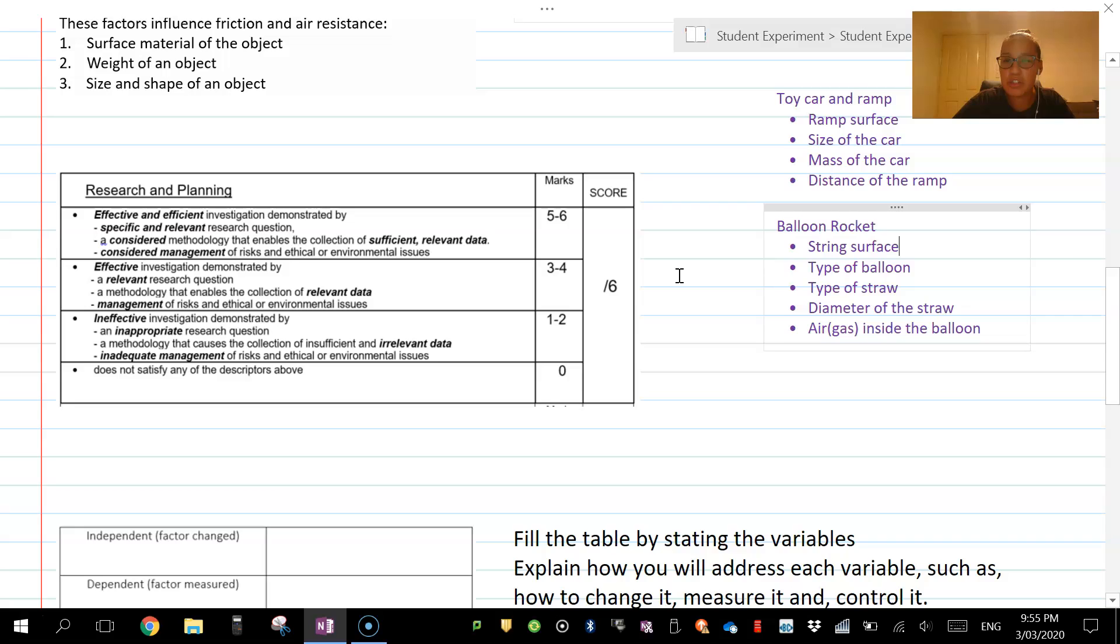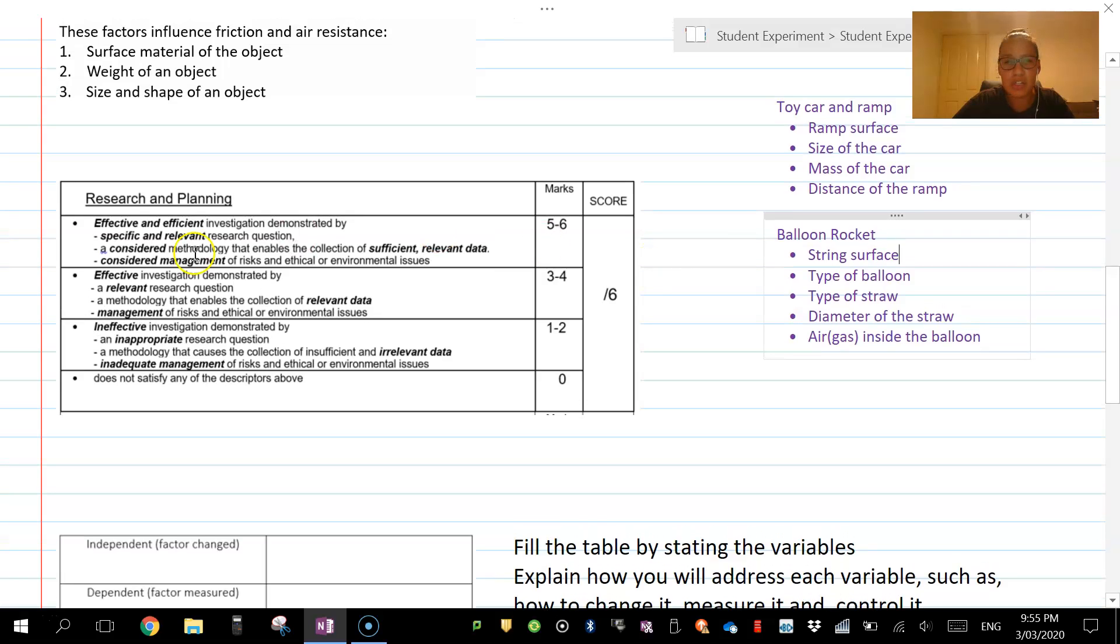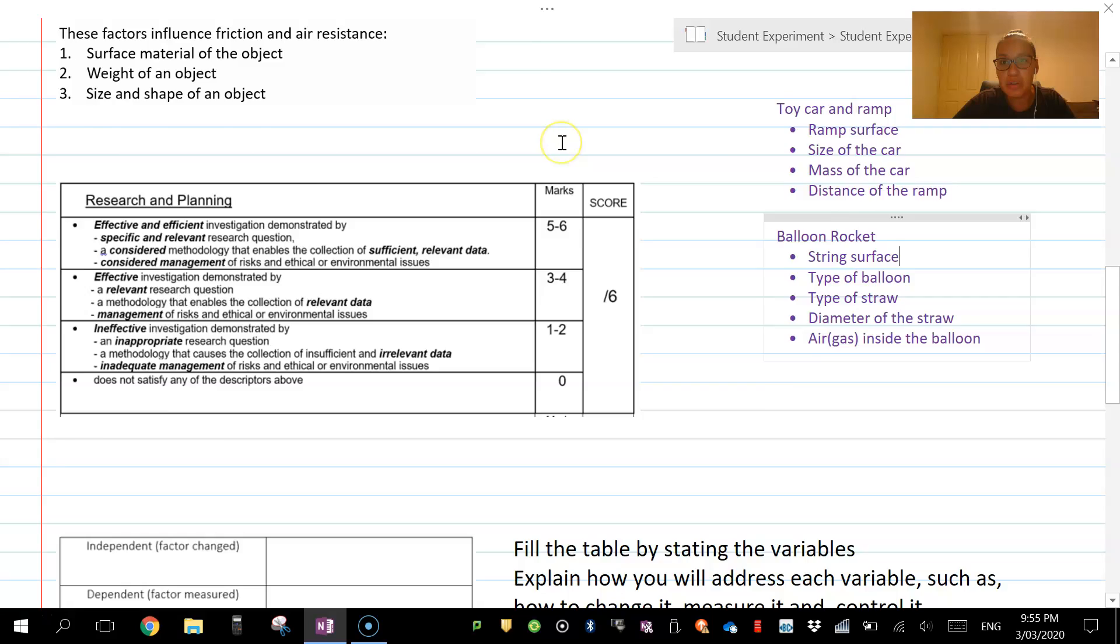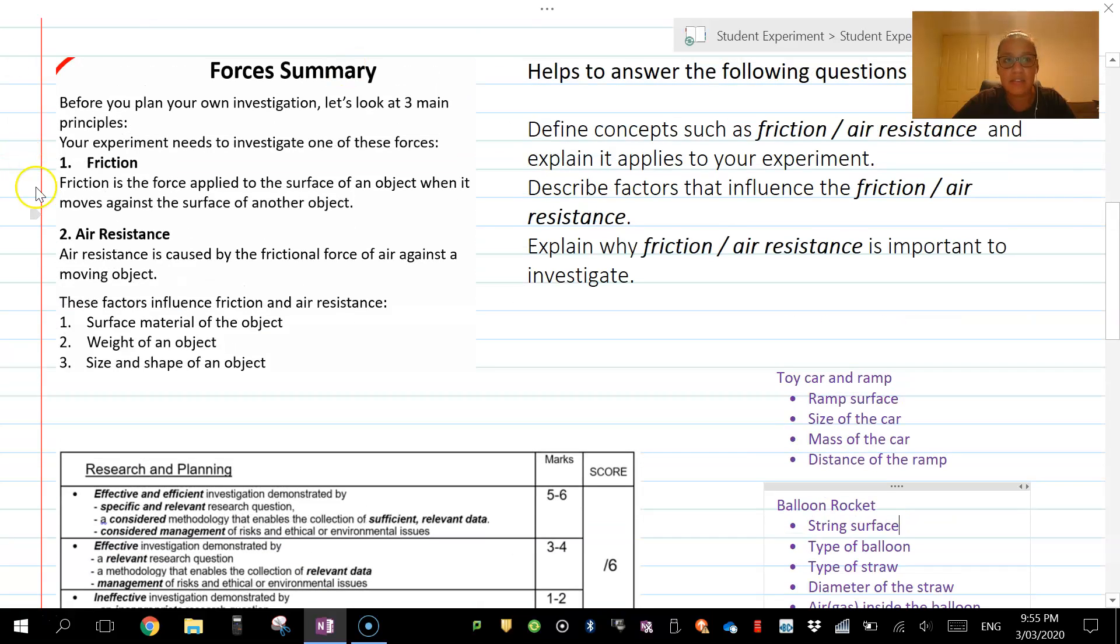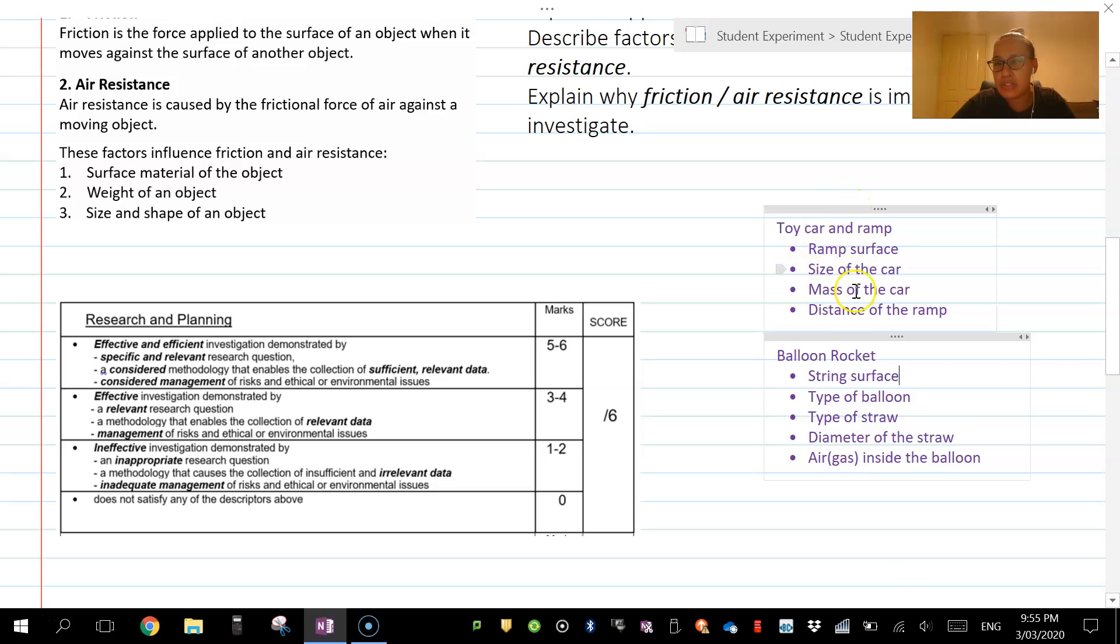What you're trying to do with your research question is make sure that it is specific and relevant. If we have a look at the way these things are modified here—these are the modifications we've potentially could come up with—we need to think about those in relation to friction, air resistance, and forces. Which one of those is not going to be linked to these things?